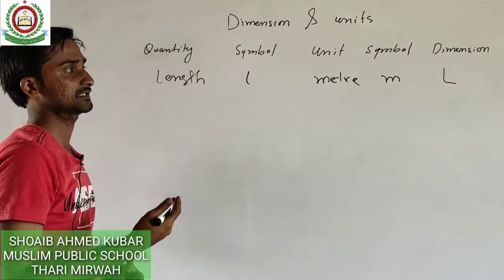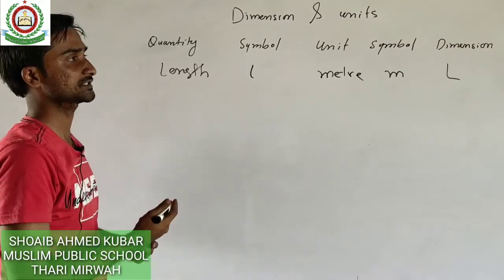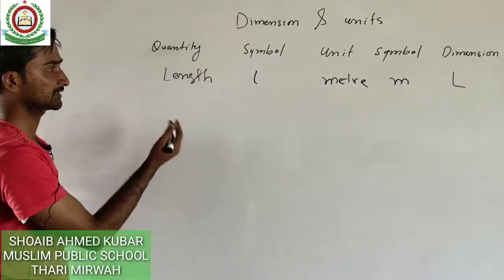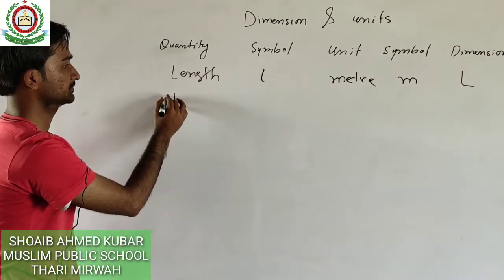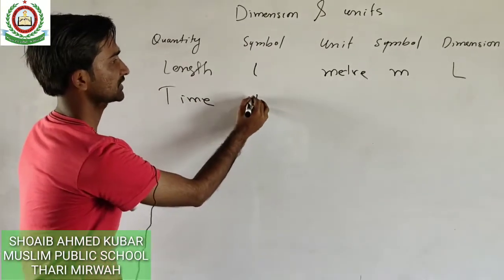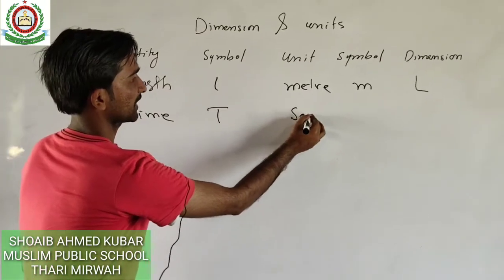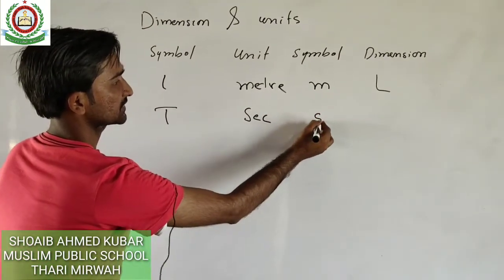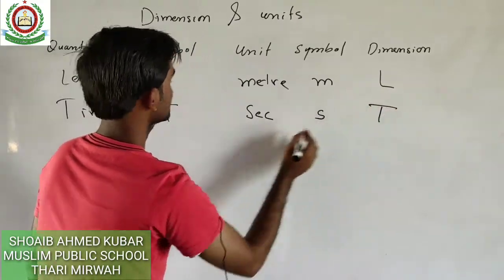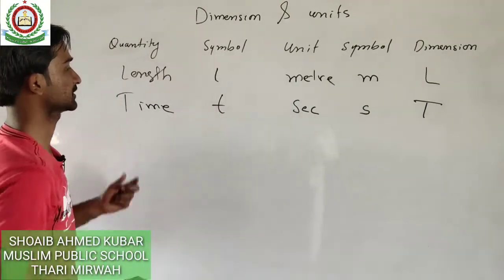Then we have the quantity time. The symbol for time is capital T, the unit for time is second, the symbol for second is small s, and the dimension is capital T.